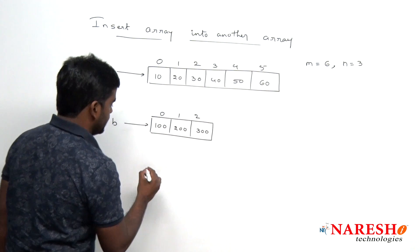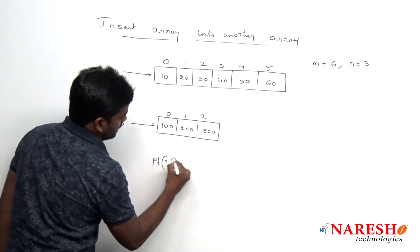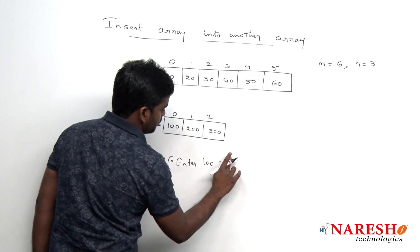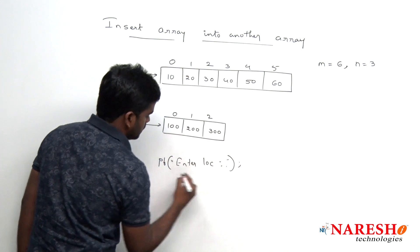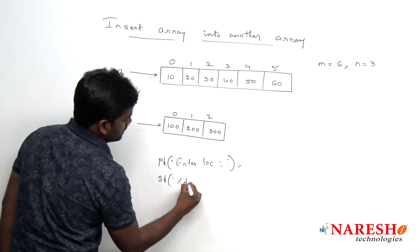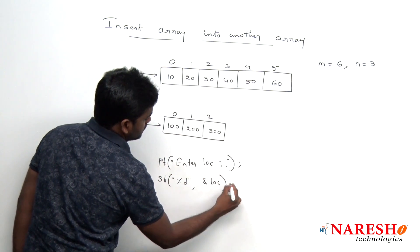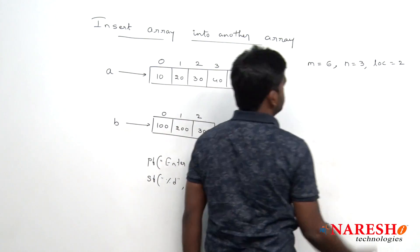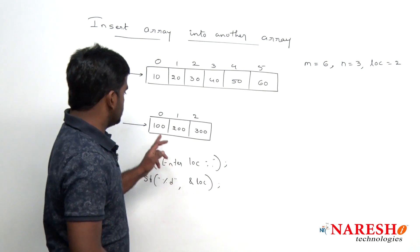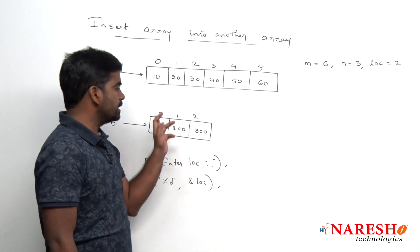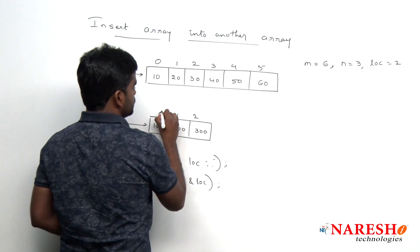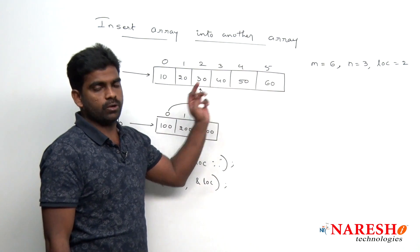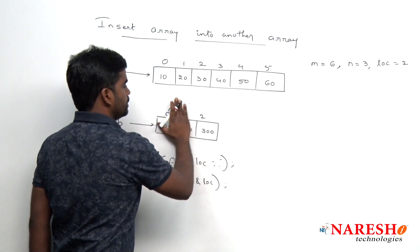Now we read the insertion location using scanf with %d into a variable called 'location'. Consider they have given location as 2. We need to insert the array at the second location. We cannot directly insert there because if we insert at position 0, the element 30 will be lost, and if we insert at position 1, 40 will be lost. So we should not insert directly.